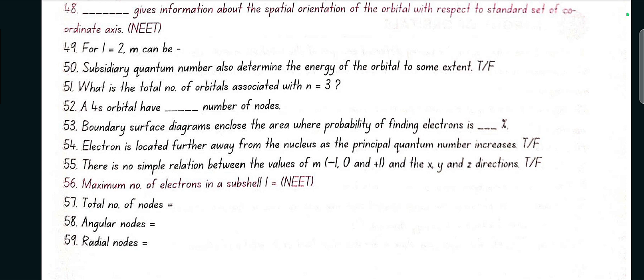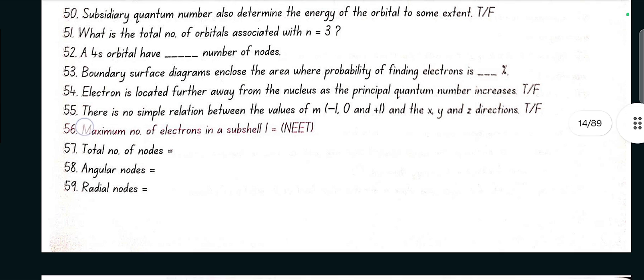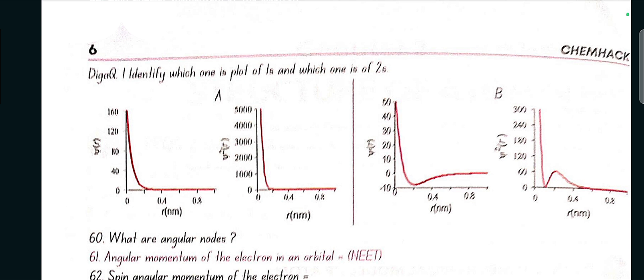Electron is located further away from the nucleus as the principal quantum number increases, yes true. There is no simple relation between the values of m, minus 1, 0, plus 1, and the x, y, and z directions, yes true. Maximum number of electrons in subshell l is given by 4l plus 2. Total number of nodes is given by n minus 1. Angular nodes is given by l, which is azimuthal quantum number, and radial nodes is given by n minus l minus 1. Diagram 1: identify which one is plot of 1s and which one is of 2s.